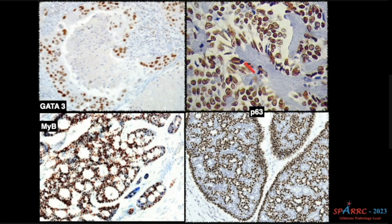Here, P63 in this tumor — you see only P63 positive in all the tumor cells. All the tumor cells are positive for P63. And the new cousin of this P63 is P40. You can do either P40 or P63. P40 is better to do.